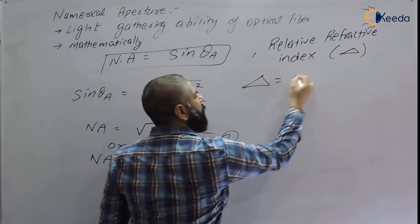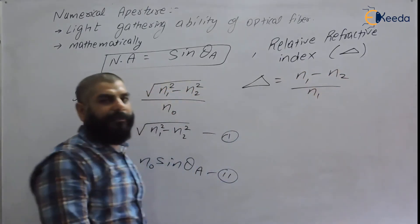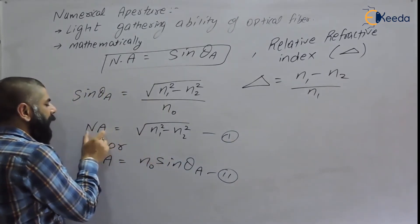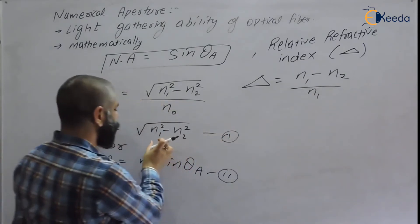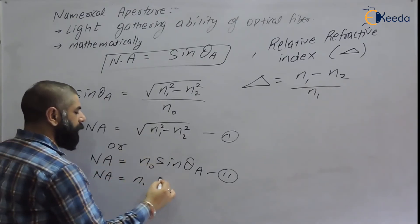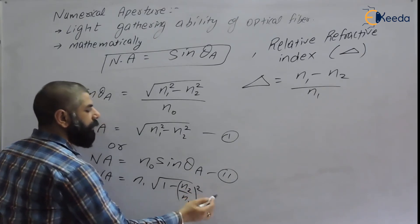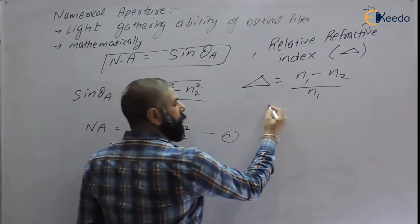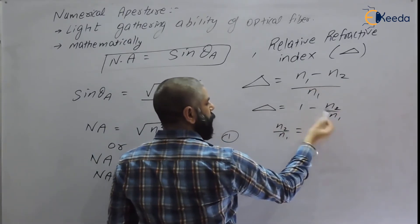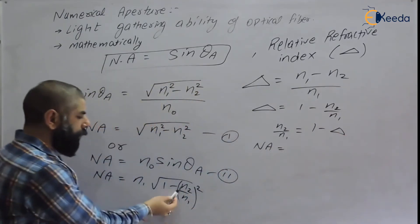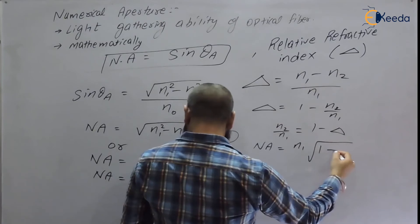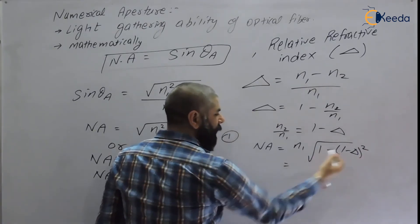We can also express numerical aperture in terms of Delta (Δ), where Delta is defined as (n1 − n2) / n1, with n1 being the refractive index of the core and n2 the refractive index of the cladding. Taking n1 common from the NA formula: NA = n1 × √(1 − (n2/n1)²). From the definition of Delta, n2/n1 = 1 − Δ, so NA = n1 × √(1 − (1 − Δ)²).